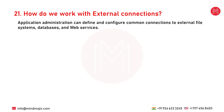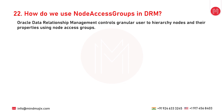The next question is: how do we work with external connections? Application administrators can define and configure common connections to external file systems, databases, and web services. Imports, exports, and books can share file and database connections to minimize maintenance of connectivity information. Database and web service connections can be configured with external operations to look up data in an external system or commit data changes to an external system.